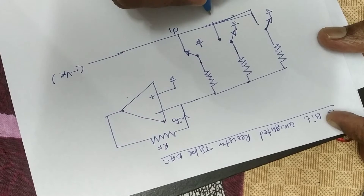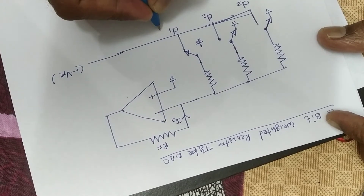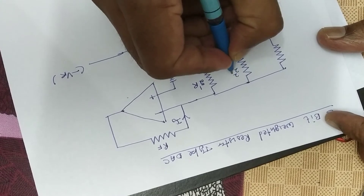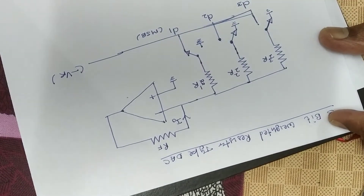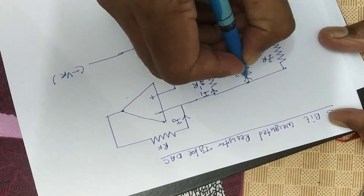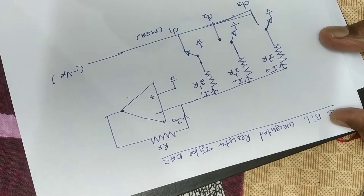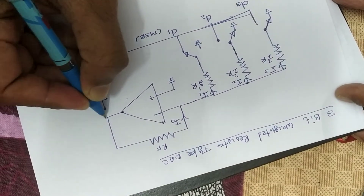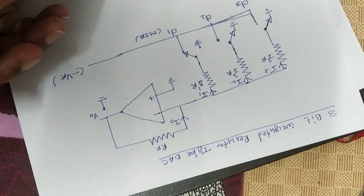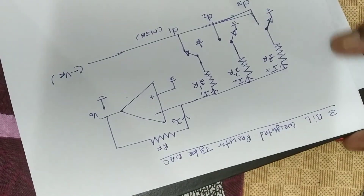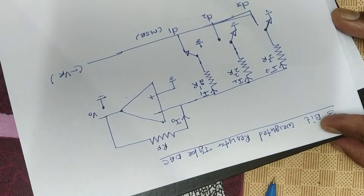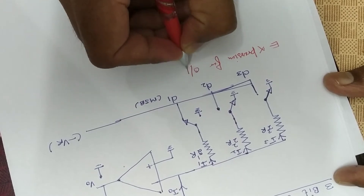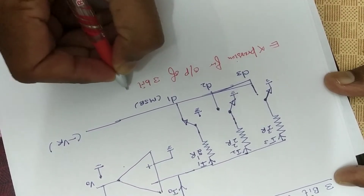We label the bits D1, D2, D3. D1 is the MSB — the most significant bit — because this is the value of the ether resistance. Current I1, I2, and I3 flow through the respective resistances. This is the output expression for the output of the 3-bit weighted resistor DAC.